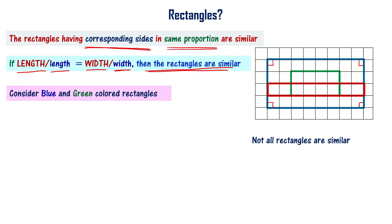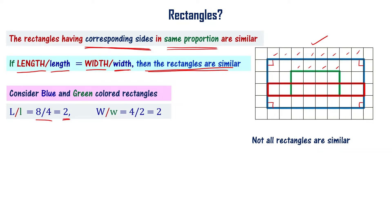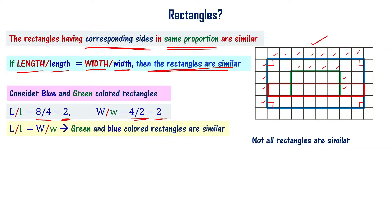Now let us look at this figure. Consider the blue color rectangle and the green color rectangle. The blue rectangle has length 8 units and the green rectangle has length 4 units, so length by length is 8 by 4, which equals 2. The blue rectangle has width 4 units and the green has width 2 units, so 4 by 2 also equals 2. Since the ratio of lengths equals the ratio of widths, the corresponding sides are in the same proportion, so the green and blue rectangles are similar.